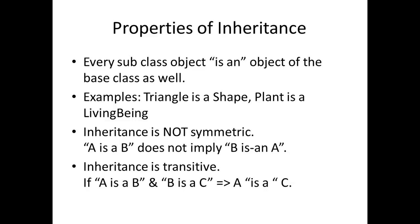An important thing to realize is that inheritance is not symmetric. So if A is a B — that is, if an object of class A is an object of class B — it does not imply B is an A. Every object of class B is not necessarily an object of class A. Inheritance is also transitive. If A extends B and B extends C, then an object of class A is also an object of class C.